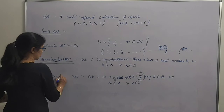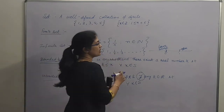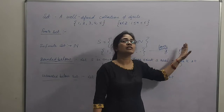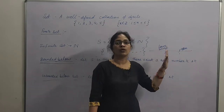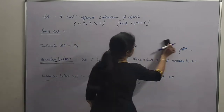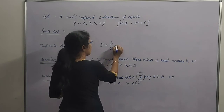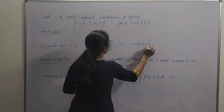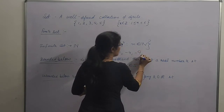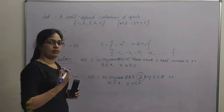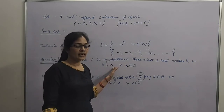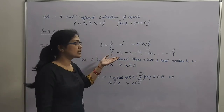Now, what do you mean by unbounded below? Agar lower side se bhi aisa koi element nahi milta jo in elements ko bound kar sake, ya koi aisa number nahi milta jis se sare elements bade hon, toh iska matlab kya hoga? Woh set bounded below nahi hai — that is said to be unbounded below. Jaise humne abhi ek example liya tha, S = {n²} which is unbounded above. Agar mein S = {-n²} le loo, ab isme kya hoga? Numbers: -1, -4, -9, -16, and so on — chote hote ja rahe hain. Toh kisi bhi chhote number se koi bhi aisa number nahi milega jis se sare elements bade hon. So this set is not bounded below.